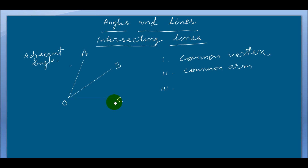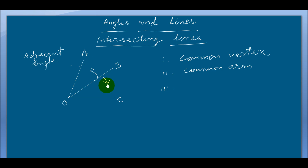The other arms of the two angles are on the opposite side of the common arm. This is the common arm OB, and the two other arms OA and OC will be on the opposite side of the common arm. If one arm is in this direction, the second arm will be opposite to this direction.